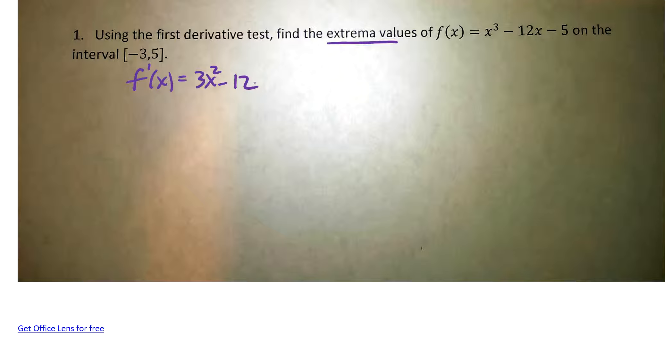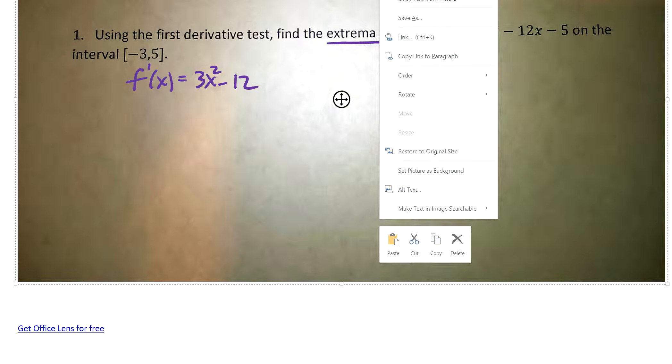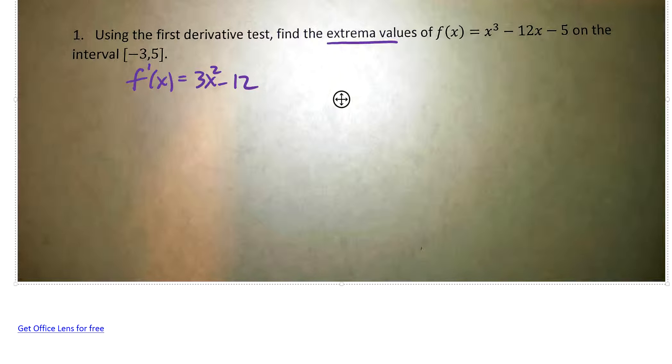I tell you guys all the time in class I don't do math at home, and I'm doing math at home. Go figure. But, this is for you. So, there you have it. So, there's the derivative. I'm going to set it equal to zero. I want to solve this. So, I get 3x squared equals 12. Divide by 3, I get x squared equals 4. Take the square root of both sides.